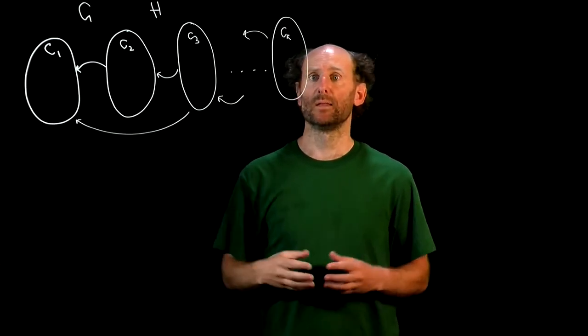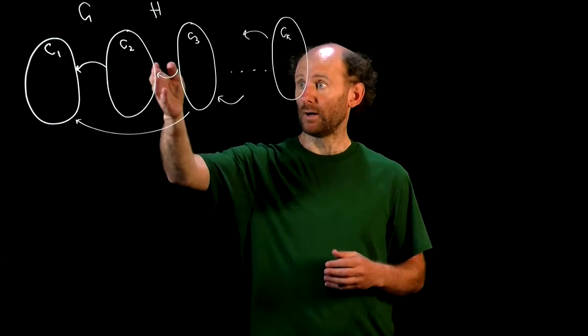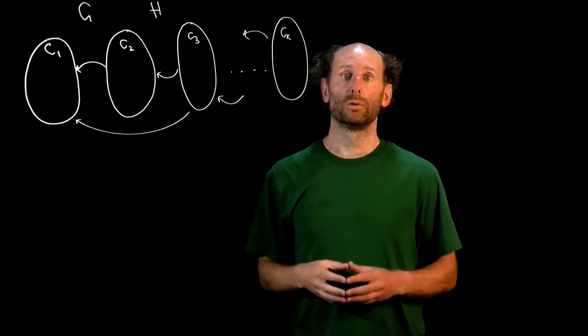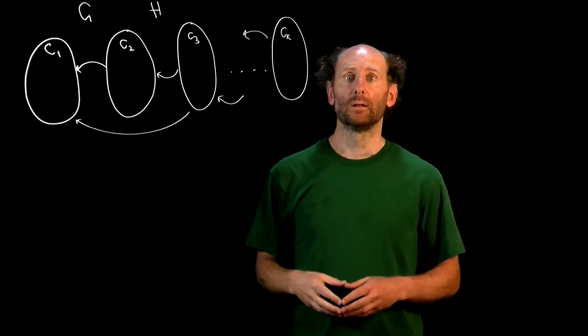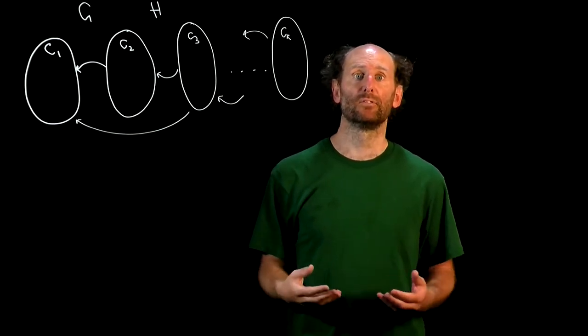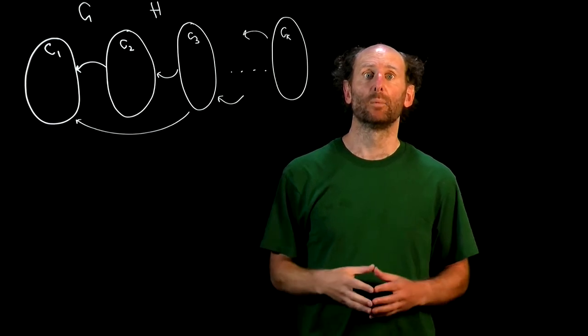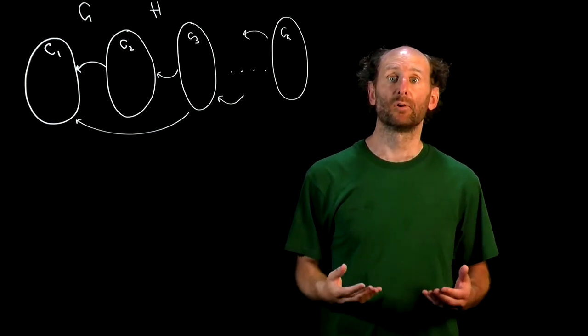So we could continue in this way and eventually find, one by one, all the strong components of G. And in fact, the same would apply if we were looking at the reverse of G, GR, which obviously has the same strong components as G.